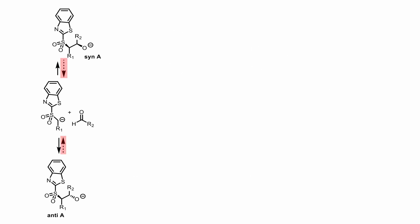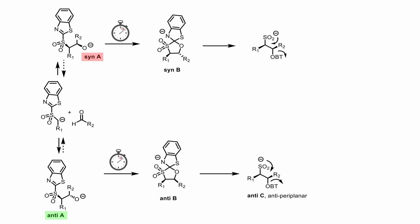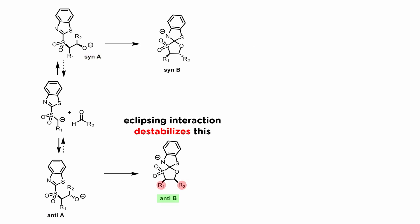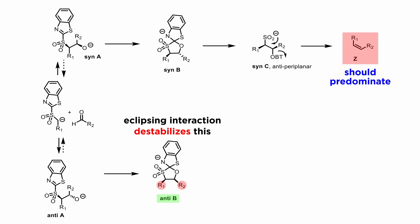Now let's go back to our scheme. If the first step is reversible, things begin to look a little different. Indeed, if R1 is benzyl and R2 is aryl, the addition of the anion to the aldehyde is reversible, and the equilibration is a fast process in relation to the subsequent steps. Now what should decide the stereochemistry is which one of syn-A or anti-A undergoes the Smiles rearrangement more quickly. Since anti-B contains an eclipsing interaction between R1 and R2, and is therefore less stable than syn-B, one would predict some preference for the Z olefin. However, this is usually not seen.